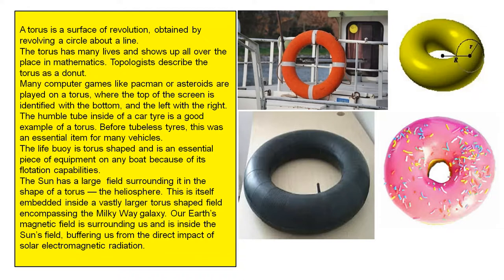This is itself embedded inside a vastly larger torus-shaped field encompassing the Milky Way galaxy. Our Earth's magnetic field is surrounding us and is inside the Sun's field, buffering us from the direct impact of solar electromagnetic radiation.